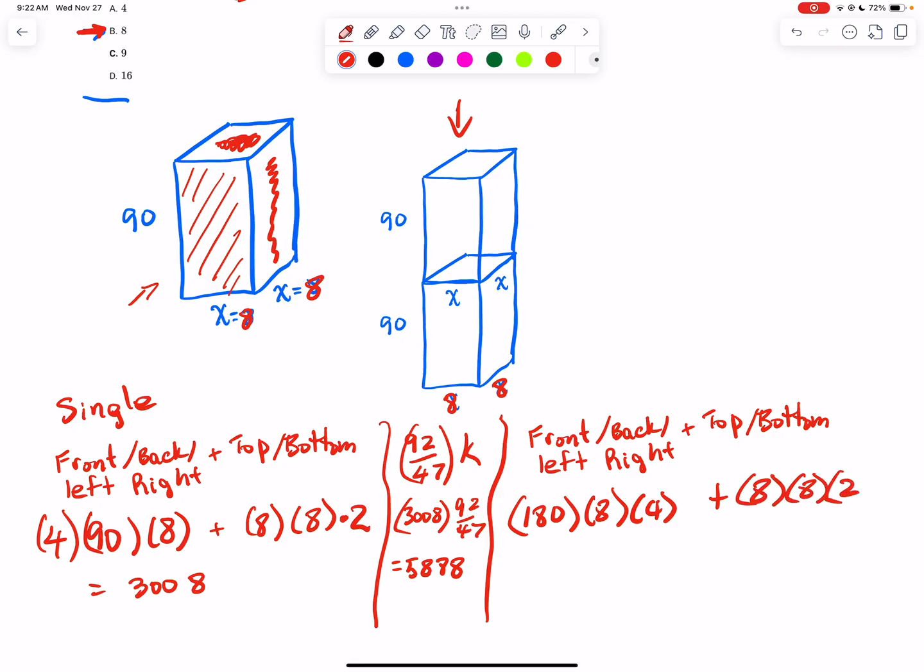For the top and the bottom, that did not change - it's still 8 by 8 and there are two of those. When you work that out, you should get 5,888, and lo and behold, those are the same values.